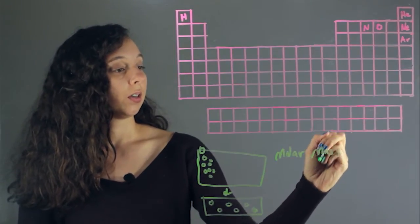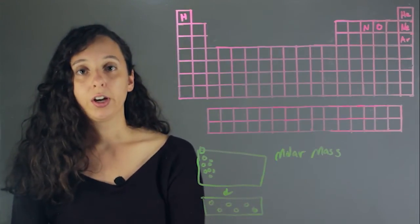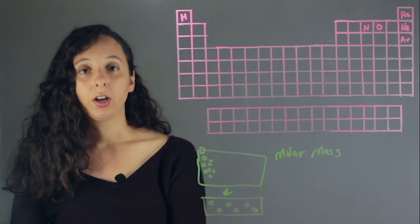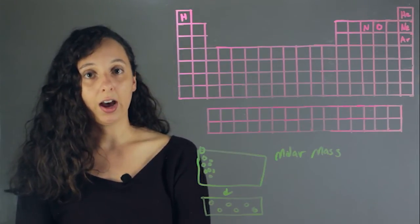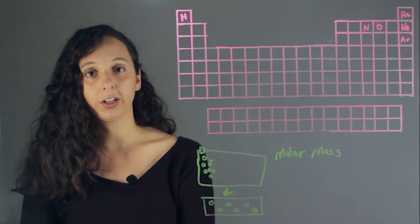In other words, how much each gas weighs. So it's just how you would expect. A big, heavy atom or gas molecule is going to be very slow.